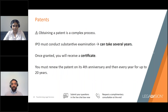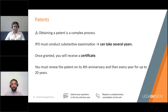Obtaining a patent is complex. You must submit an application to the IPO with details of your invention and supporting documents, along with the relevant fee. The IPO will then carry out searches and a substantive examination of your invention. This process can take several years, compared to a trademark which takes around four months. If your patent is granted, it will be published in its final form and you'll be sent a certificate. You must then renew the patent on its fourth anniversary and every year thereafter for up to 20 years.